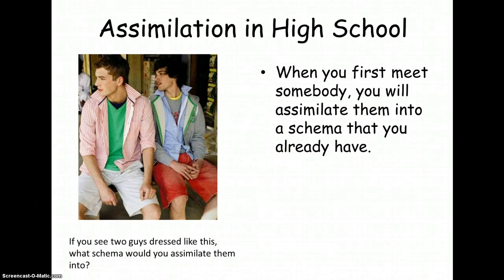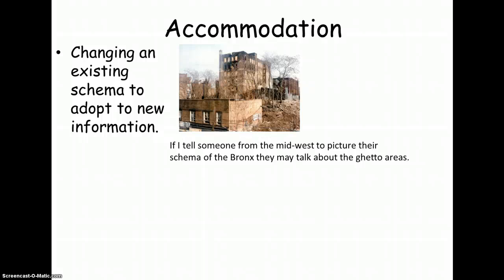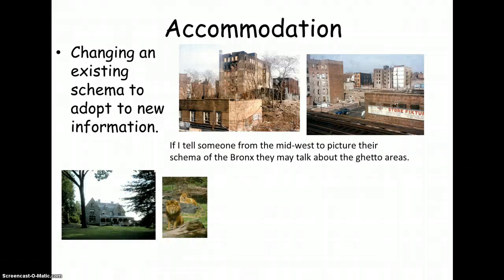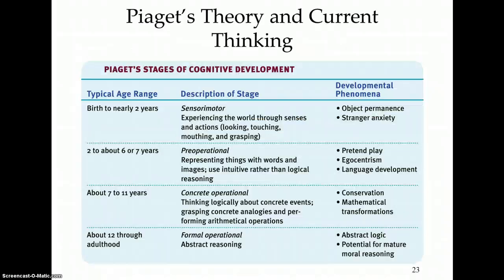Another assimilation example: in high school, if you see two guys dressed a certain way, what schema do you assimilate them into — and are you always right? When you're wrong, you adjust your schema, and that's accommodation. For instance, someone from the Midwest might picture the Bronx as a ghetto, but the Bronx actually has really cool things — nice neighborhoods, an expensive cost of living, a great zoo, a great park. You're forced to accommodate and change your schema to incorporate the new information.